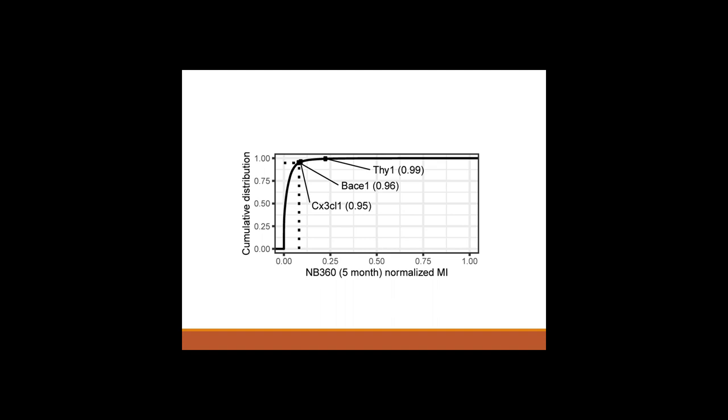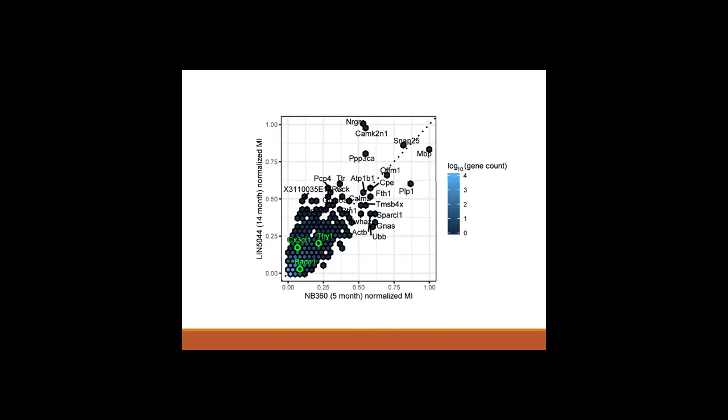But these are controls. And then the question is, of course, what else do you find, and I tell you, it's amazing. We find an entire network of very interesting genes. You know, neuregulin, SNAP25 is the SNARE complex, the presynaptic complex, and you have the myelin basic protein that is very highly expressed.